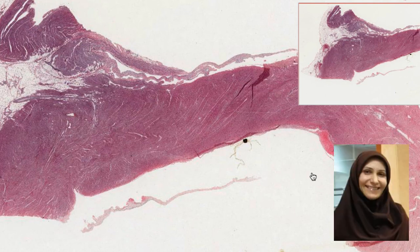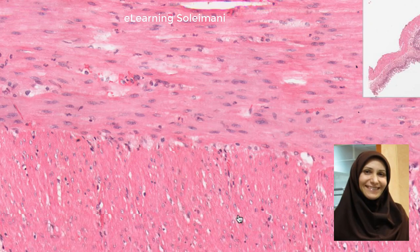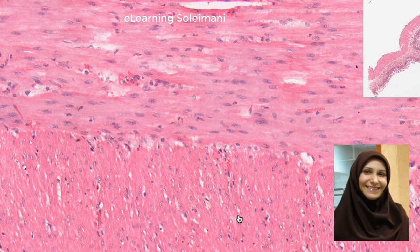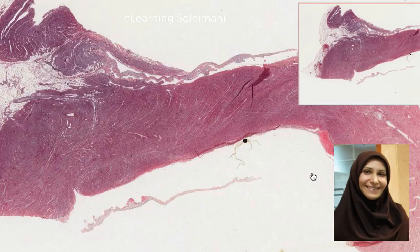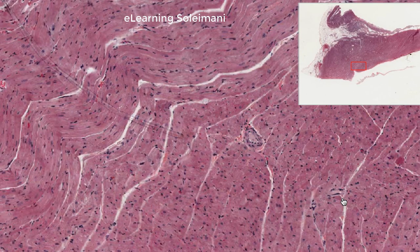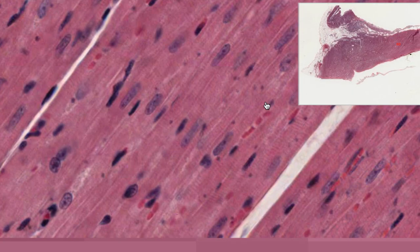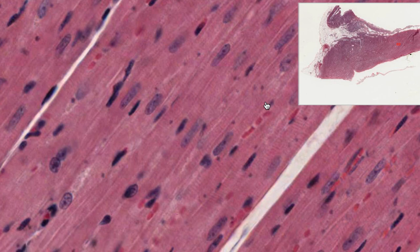The muscular tissue consists of three types of muscles: cardiac muscle, skeletal muscle, and smooth muscle. In cross-sectional views, the twisted shape of the cardiac muscle makes it difficult to distinguish between its longitudinal and transverse sections. With higher magnification, the details of the cardiac muscle become more visible.